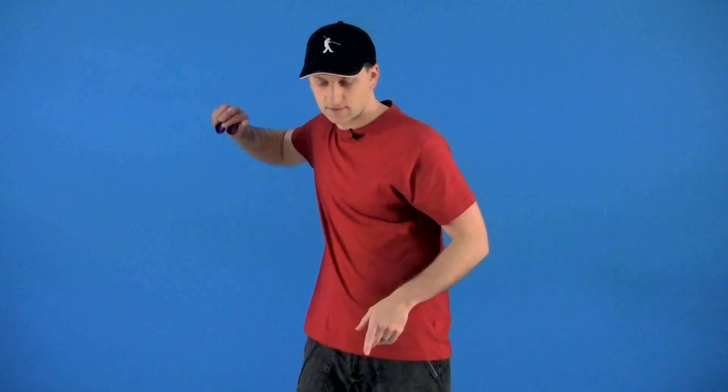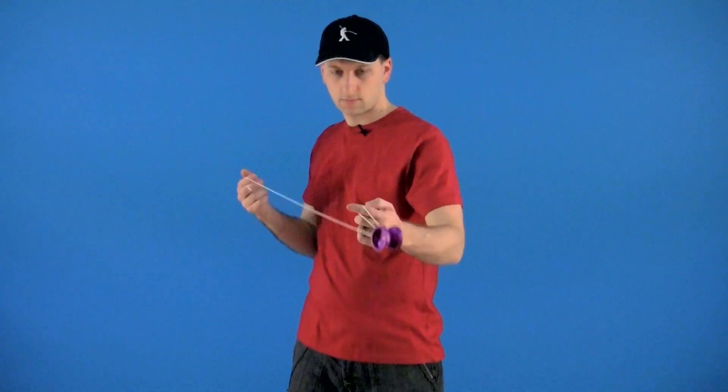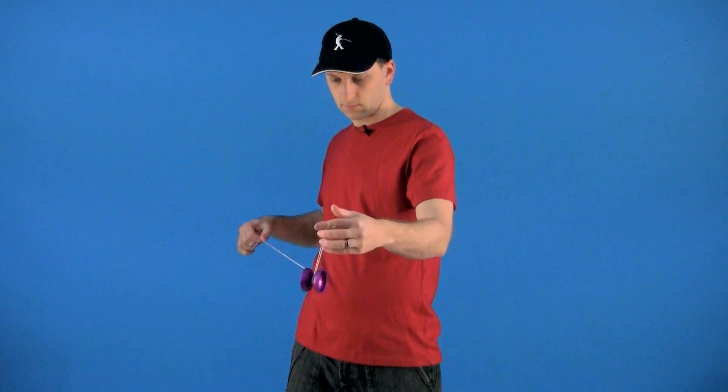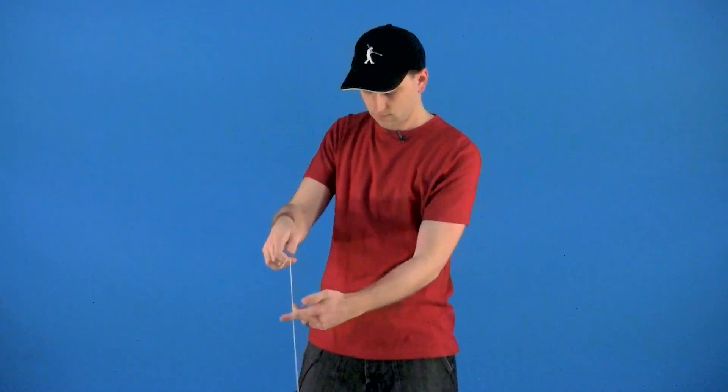This is trick number 17 of the 1A yoyo trick ladder, it is called the gyroscopic flop and it looks like this. That is it.